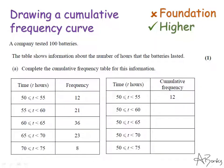So I'm going to do my running total. They've done the first value for me — that's just 12. The next one down is 21, so in my cumulative frequency I have 12 and 21, which is 33. In the next row I've got another 36, so accumulating that gives 69 in total so far. Then I've got another 23 to add on, so that's 92. And my last one is 8, so that's 100.